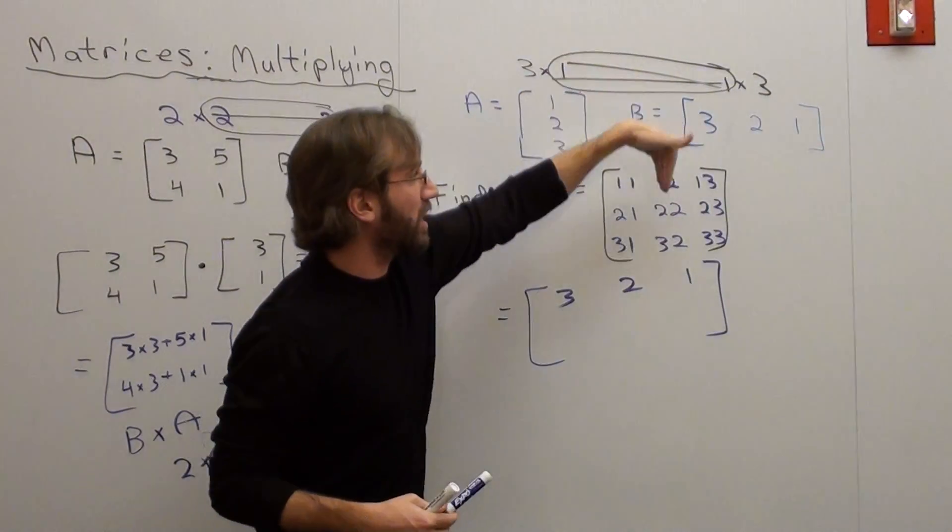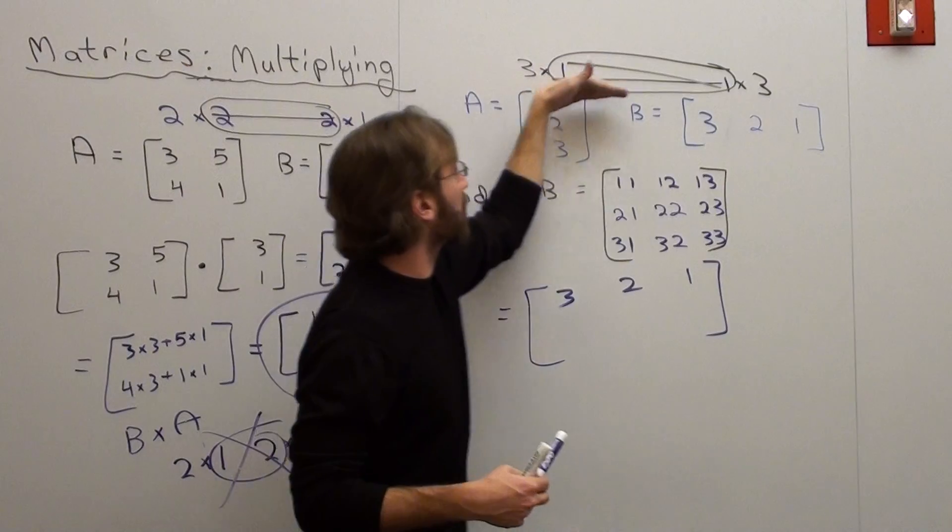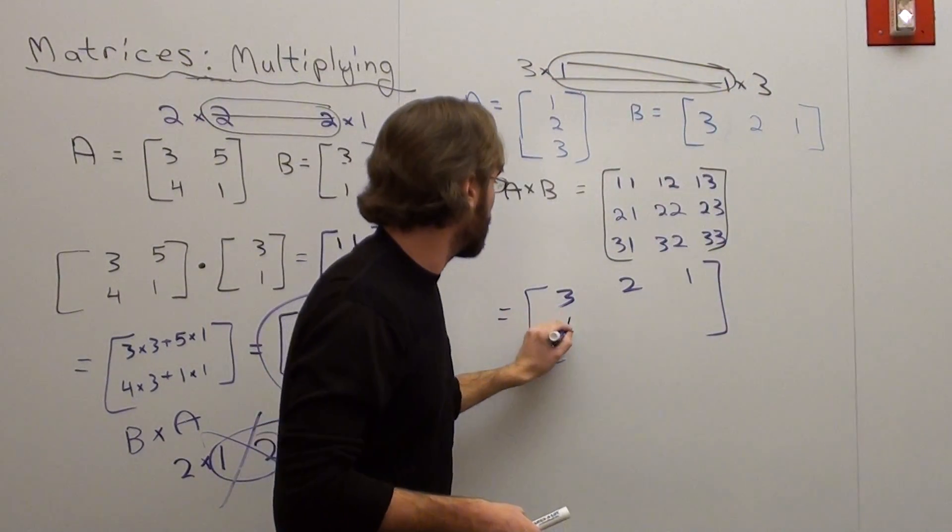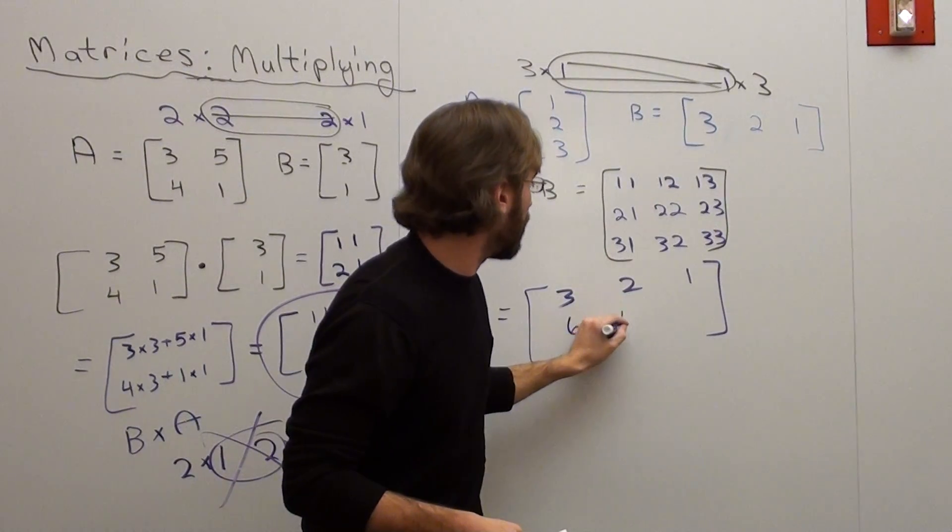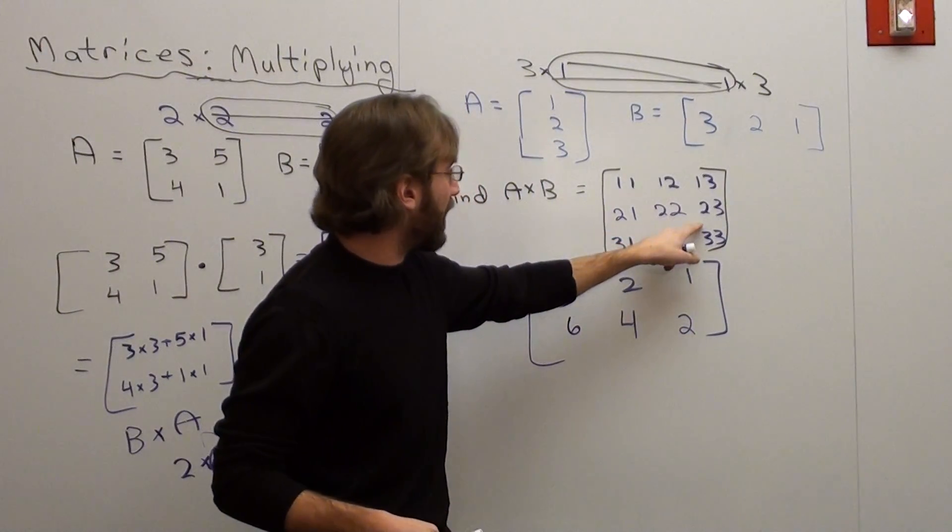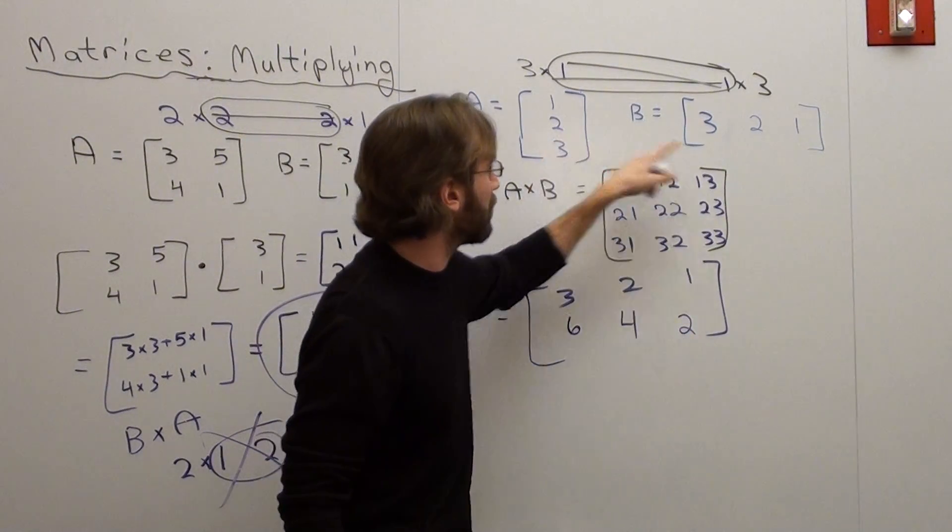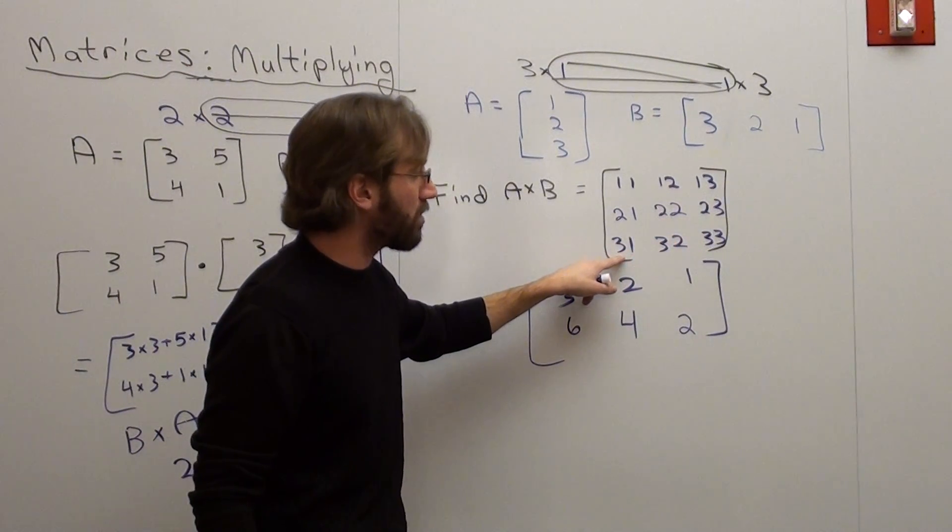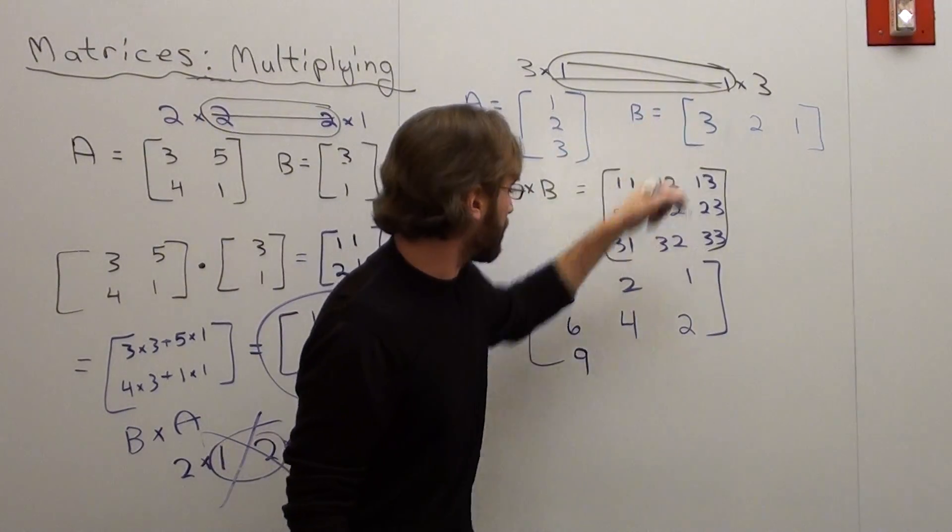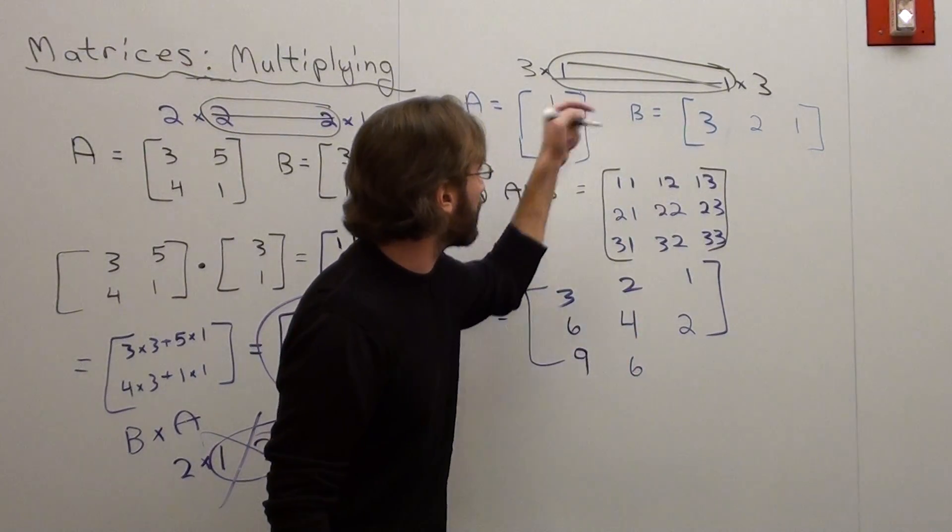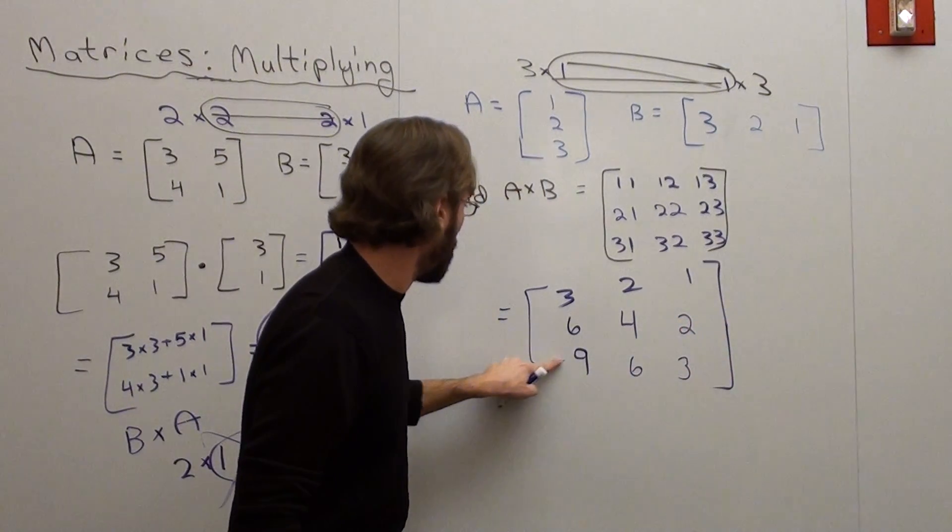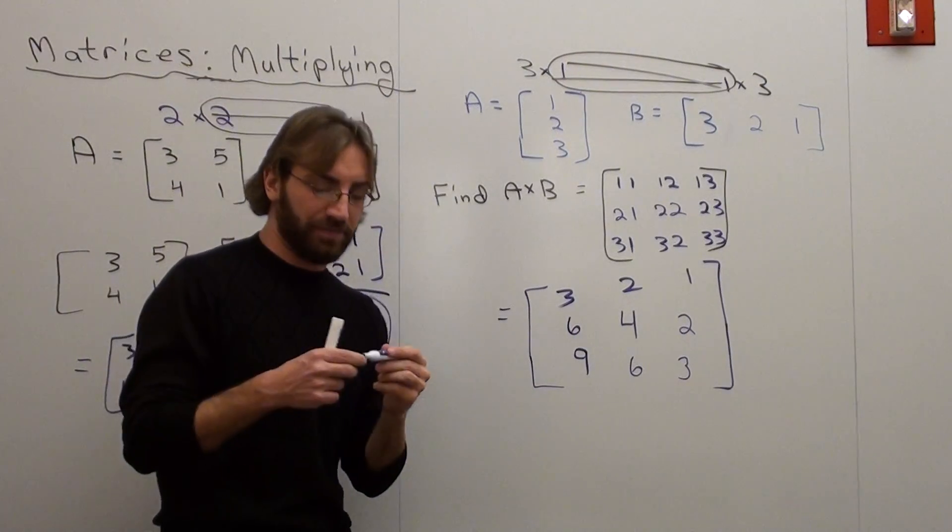I took each row multiplied by a column, each row multiplied by the next column, each row multiplied by the next column. Next one: 2 times 3 is 6, 2 times 2 is 4, 2 times 1 is 2. And see, I'm looking at that as a map. This one tells me to take row 3, column 1, so it's 3 times 3, which is 9. 3 times 2, which is 6. 3 times 3. And that's what you do.